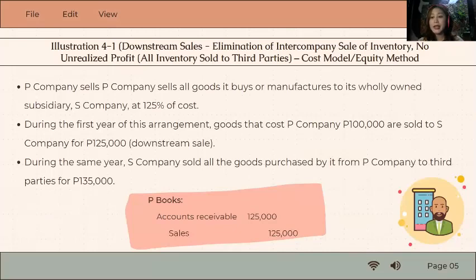In the first place, you eliminate the inventory that the parent sold to the subsidiary because they shouldn't be selling to each other from the consolidated point of view. For this example, P company sold goods—it sold inventory to the subsidiary at 125% of cost. So P's cost was 100,000, then sold to S company for 125,000. So it is a downstream sale.